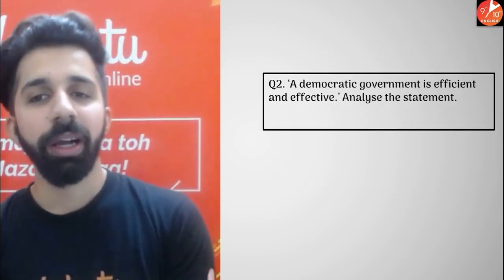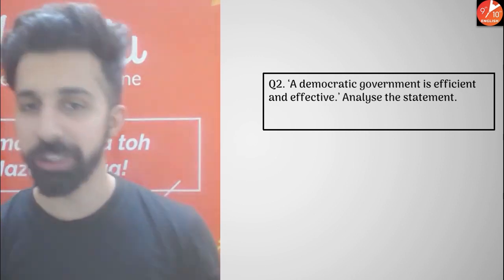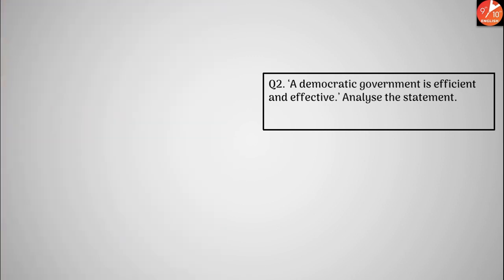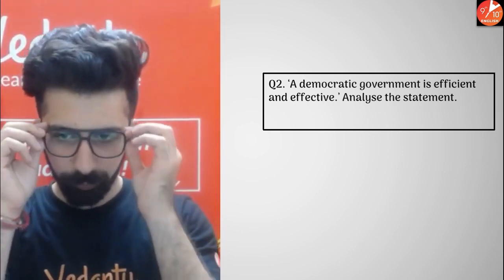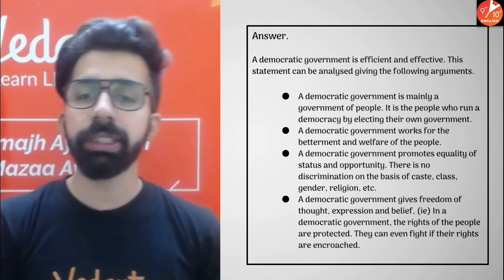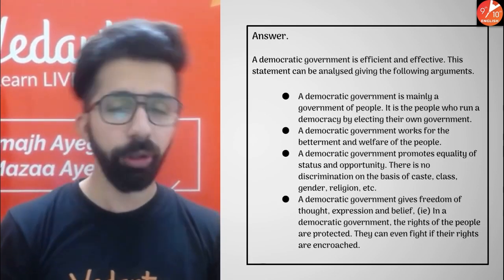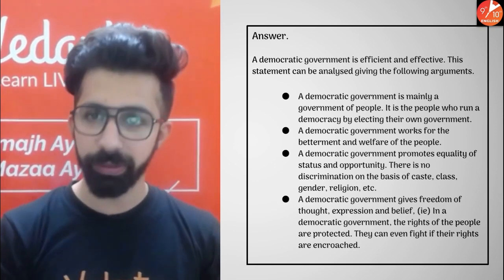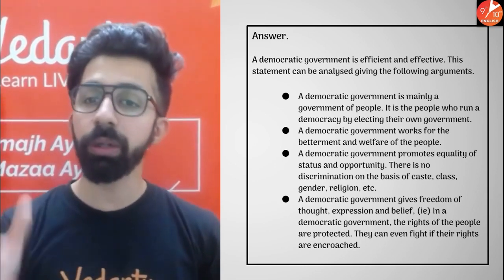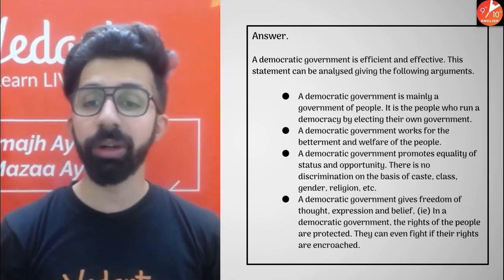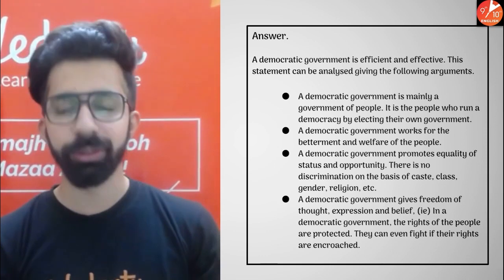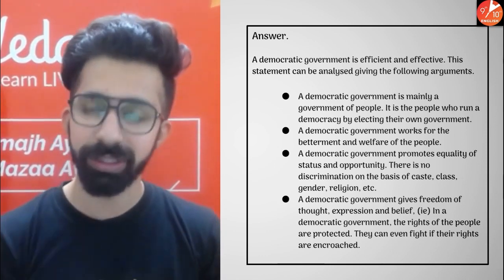Second question on the screen: A democratic government is efficient and it is also effective — analyze this statement. A democratic government is mainly a government of the people. It is the people who run a democracy by electing their own government. A democratic government works for the betterment and welfare of the people, so it is responsive to the needs of the people.